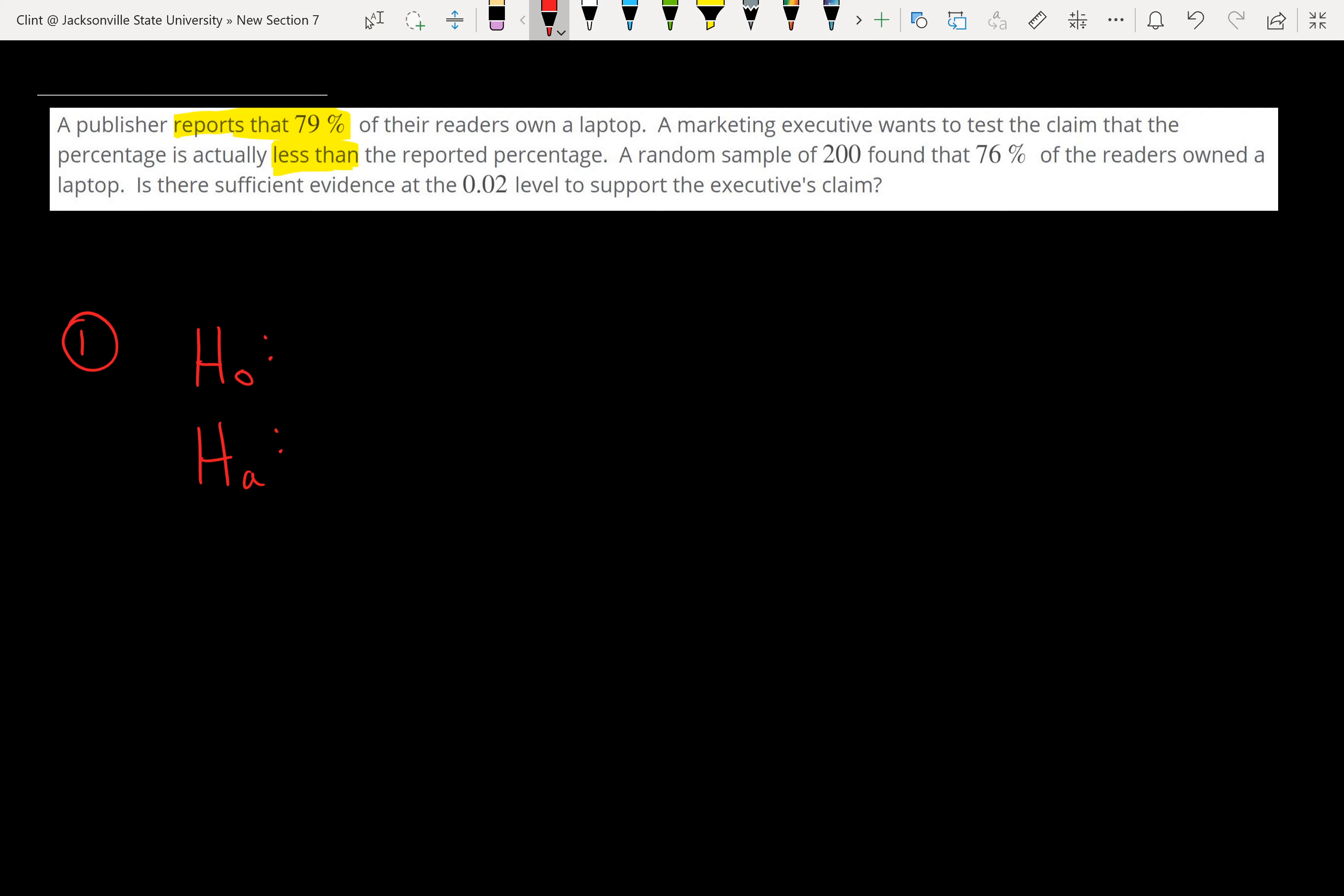We don't even have to read on further into the problem for this step. We want to know if our percentage is less than the reported percentage. So here percentage is a proportion, so we're dealing with p. We want to know if p is less than the reported percentage, which is 79%, or if we change that to a decimal, that's 0.79. For this step it doesn't matter if you write it as a decimal or a percentage, but later on we'll want it as a decimal because it's easier to use. So we want to know if p is less than 0.79. That makes our null hypothesis. Remember it's got to be the opposite and have equality. So p is greater than or equal to 0.79.